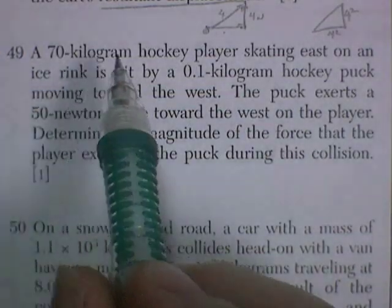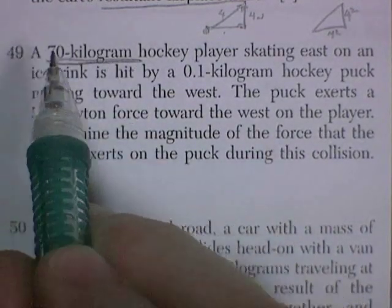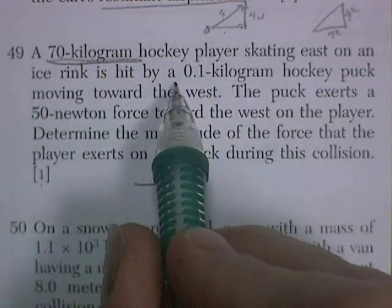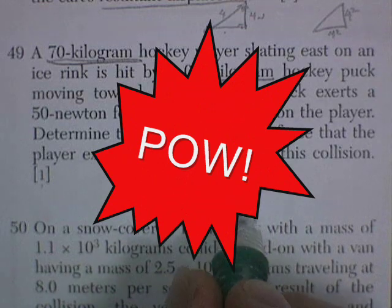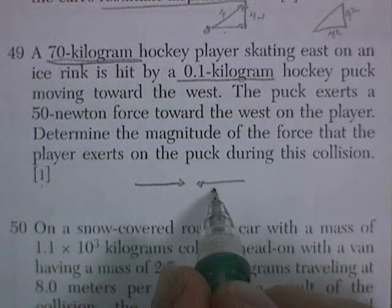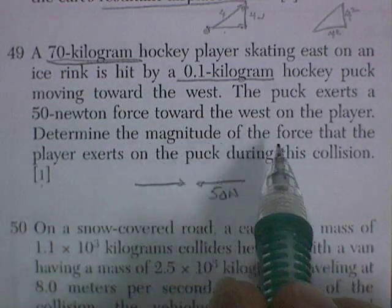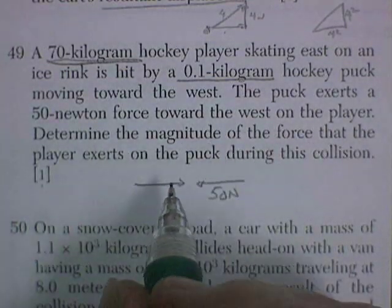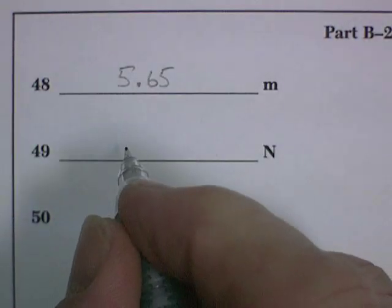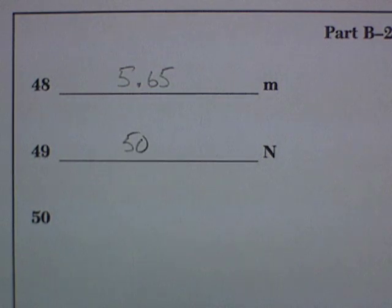Question 49. There's a lot of numbers here for just one point. A 70 kilogram hockey player skating east on an ice rink is hit by a 0.1 kilogram hockey puck moving towards the west. The puck exerts 50 newtons of force on the player. Determine the magnitude of the force that the player exerts on the puck. Equal and opposite forces. It hits with 50 newtons. The player's going to hit it with 50 newtons of force. One point. Not a lot of fancy stuff there.